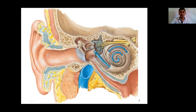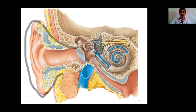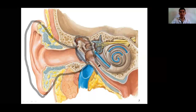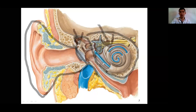In this coronal section of the ear we can distinguish three portions: the external ear, middle ear, and inner ear. The middle ear and inner ear are placed within the petrous part of the temporal bone. The external ear is represented by the auricle and external acoustic meatus.